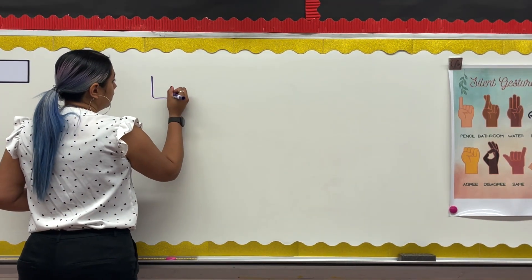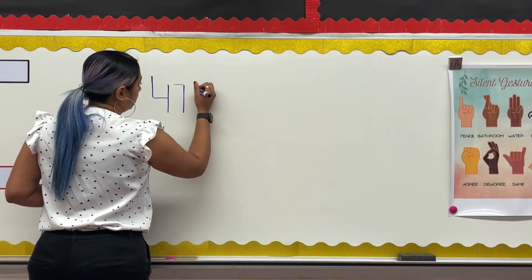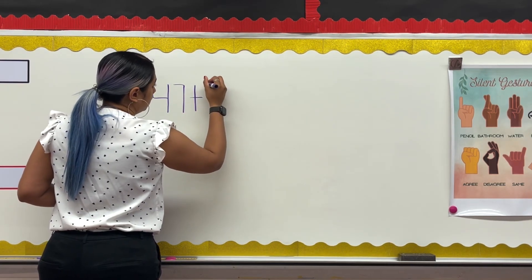First, I write my equation horizontally. My equation is 47 plus 29.